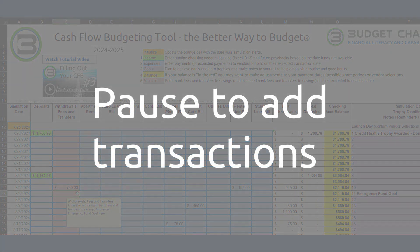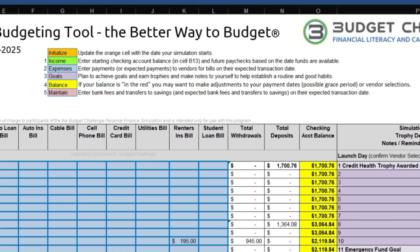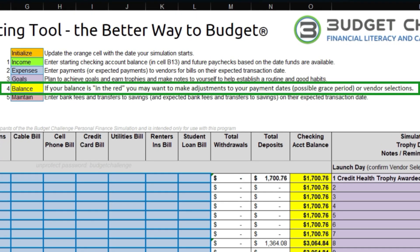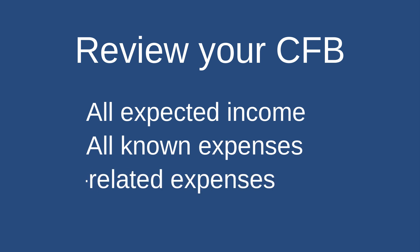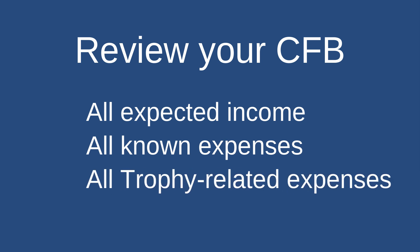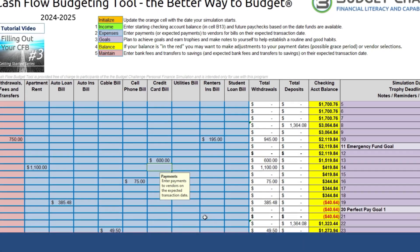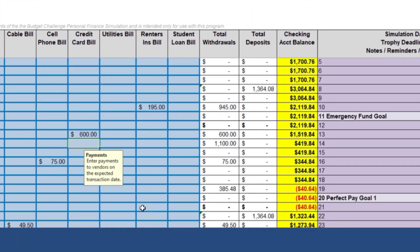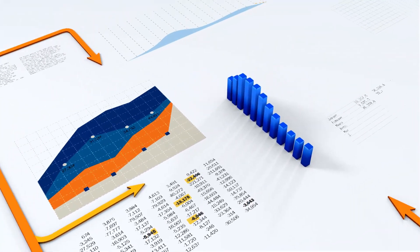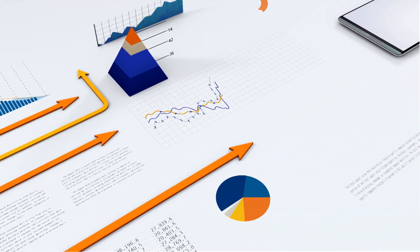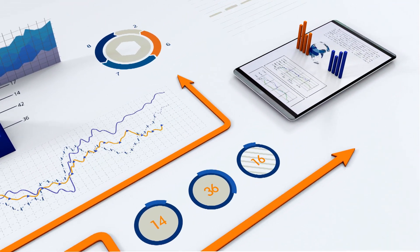Now we are on Step 4, Balance. In this step, we are going to fine-tune our budgeting plan based on our cash flow. After you are sure that your budget contains all expected income, all known expenses, and all trophy-related expenses, you will want to check the yellow column in your CFB for the entire 10 weeks. If you have any red numbers, you are forecasted to have a cash flow problem. While making sure that you pay every bill and earn all trophies, there are some adjustments that you can experiment with to resolve cash flow problems in your CFB.